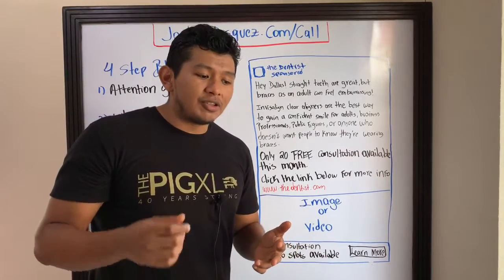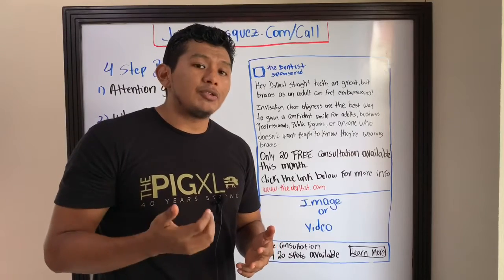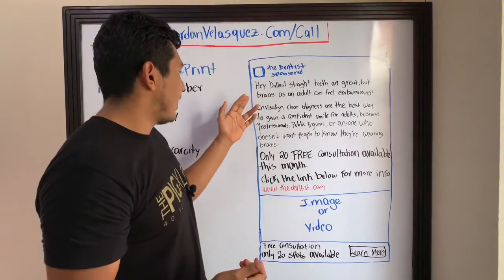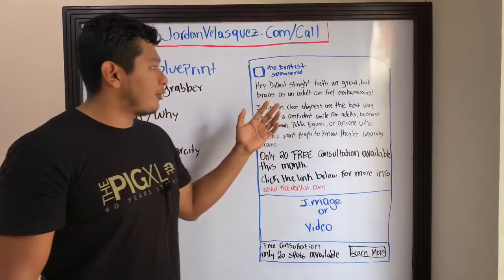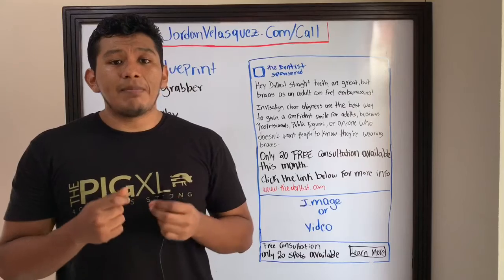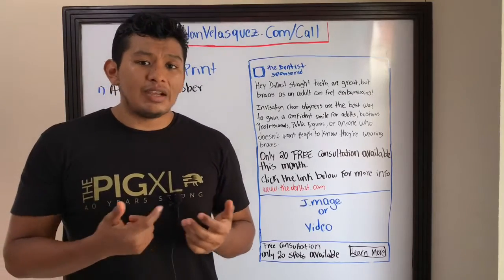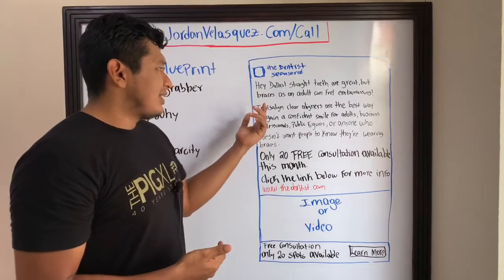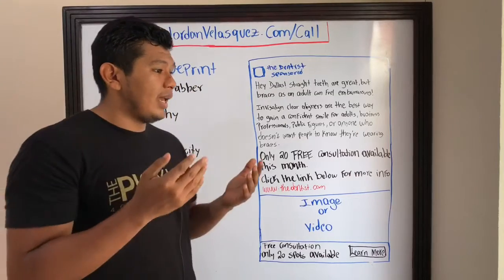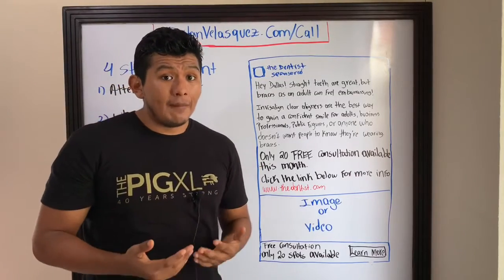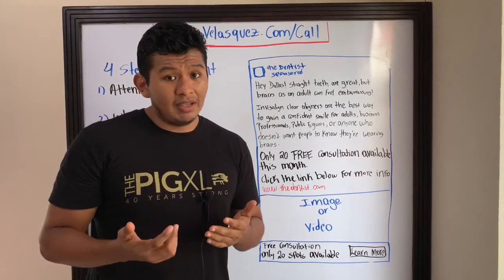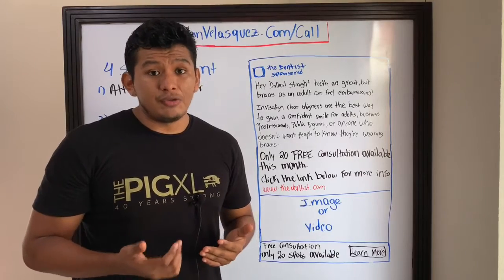Step one is the attention grabber — the hook. Users are scrolling really fast on Facebook, so you need to grab their attention as soon as possible. For example: 'Hey Dallas, straight teeth are great but braces as an adult can feel embarrassing.' Or it can be a question like: 'Do you want straight teeth but don't want to use braces?' Immediately the user will relate, because you already did your research.